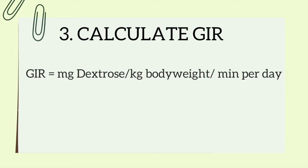The other thing you'll want to calculate is the GIR — the glucose infusion rate. It's calculated as milligrams over kilograms over minutes. The key is to notice it's milligrams, not grams. The kilograms refers to the body weight of the patient, and the minutes is the minutes in the day, which equals 1,440 minutes. The GIR should usually be under 4 to prevent hyperglycemia. If your GIR is above 4, you'll want to reduce the rate you deliver the TPN, and remember you'll have to recalculate everything else.